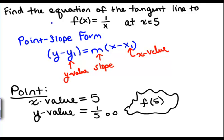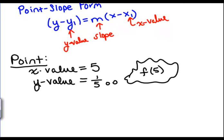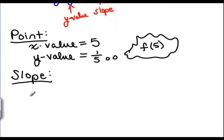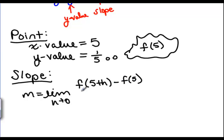That was the easy part. Now what about the slope? Well the slope is just what we've been practicing so far. So we have the slope equaling the limit as h goes to 0, f of 5 plus h minus f of 5 all over h.